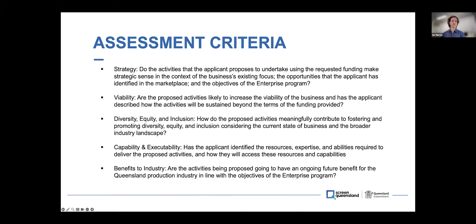We need to understand how the proposed activities are meaningfully going to contribute towards fostering and promoting diversity, equity, and inclusion in the context of the current state of the business and broader industry. From a capability and executability perspective, we need to understand that you've identified the resources and expertise needed to deliver those proposed activities and how you're going to access those if you don't have them in-house. And lastly, talk to the benefits to the industry — how are the activities going to have a benefit for the ongoing future of the Queensland production industry. Familiarise yourselves with those five criteria; they're on the website.